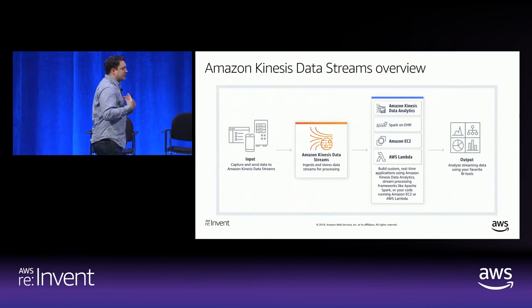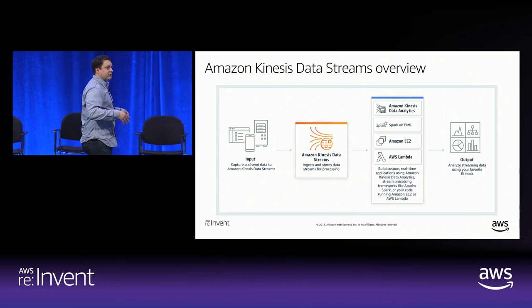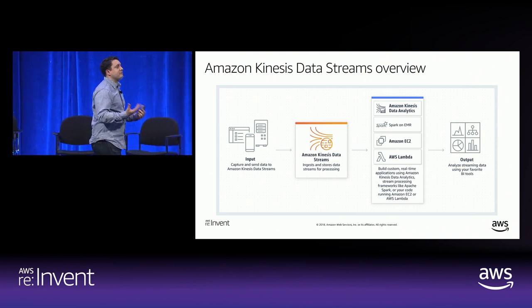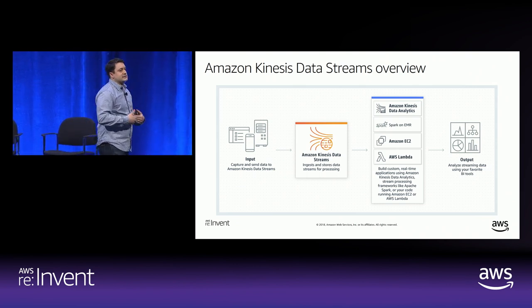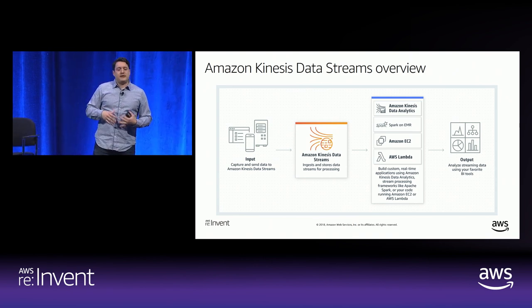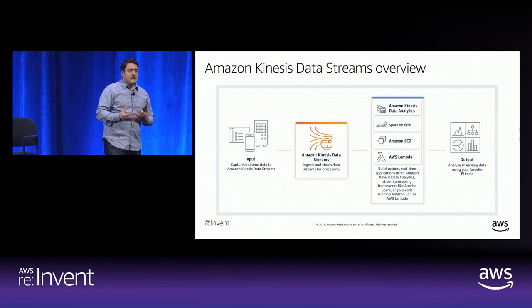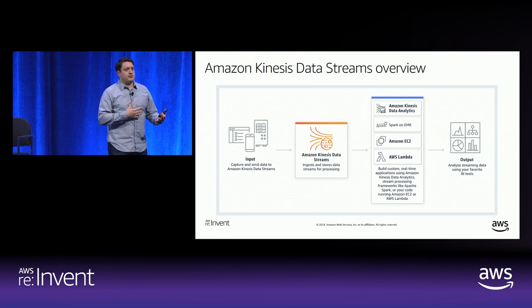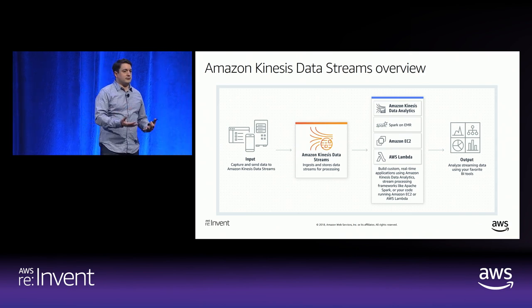When customers use Amazon Kinesis Data Streams, they create a stream. They have a set of producers that write to that stream and a set of consumers that read from the stream and then do something with it. Back to the continuous nature — both the producers and the consumers are acting continuously.